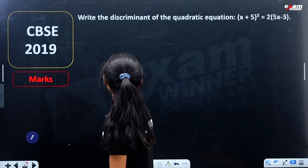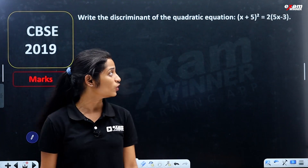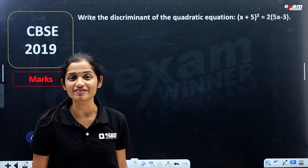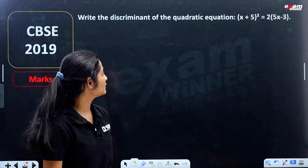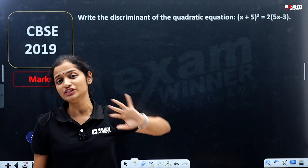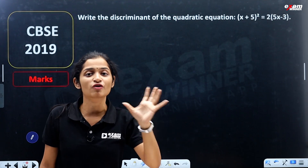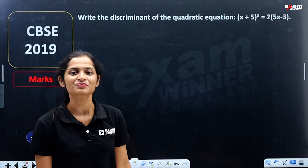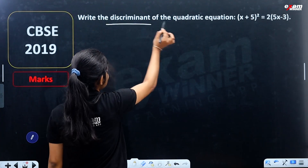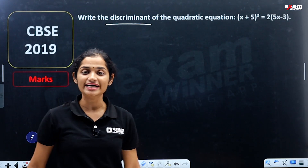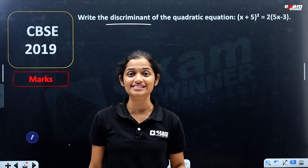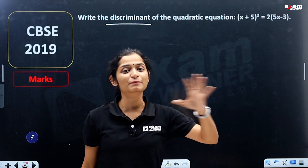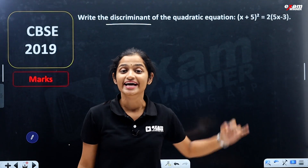Next question: Write the discriminant of the quadratic equation (x + 5)² = 2(5x - 3). We have a quadratic equation and we need to find the discriminant. This is a different type of discriminant-related question. We will expand the equation.